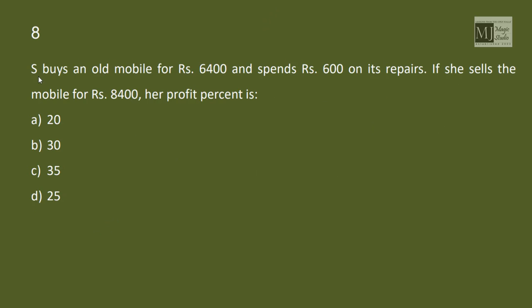S buys an old mobile for 6400 and he spends 600 on repairs, so total cost of mobile to S is 7000 rupees. If she sells the mobile for 8400, this is cost price now and selling price is 8400, that's profit is 1400. Her profit percent is 1400 by cost price that is 20 percent.